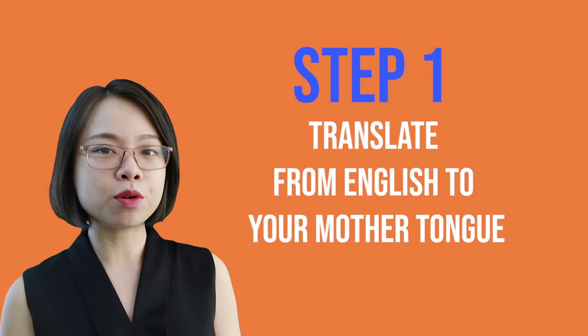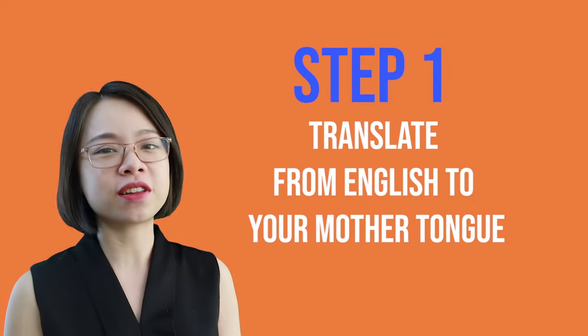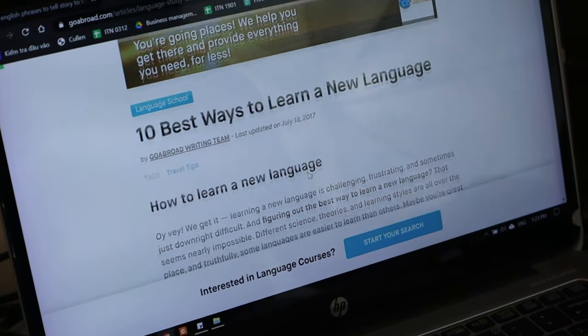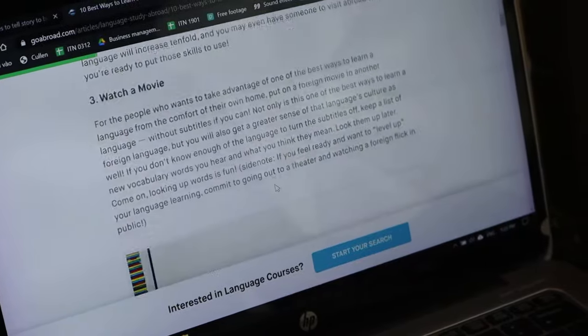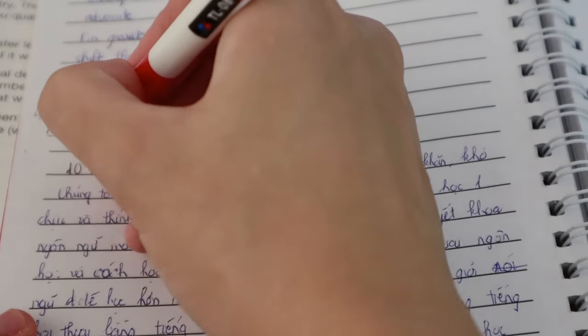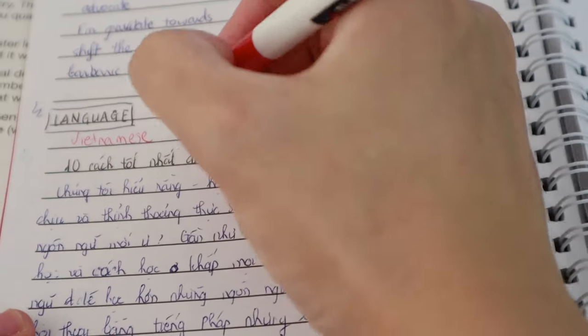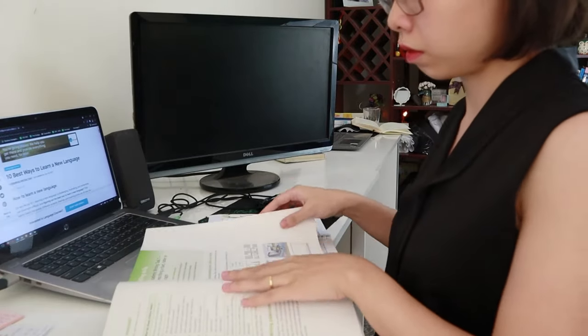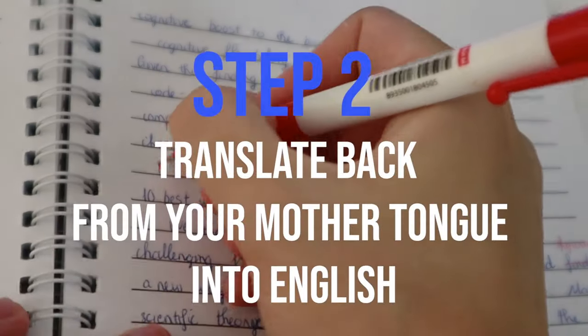Step number one: pick a writing or speaking sample and then translate it into your mother tongue. Try to use authentic material written by a native speaker of about 250 words. It can be an article or blog post, a writing or speaking sample from an official IELTS resource, an abstract from a book, or a transcript of a speech. Step two: wait a while, and then translate it back into English.